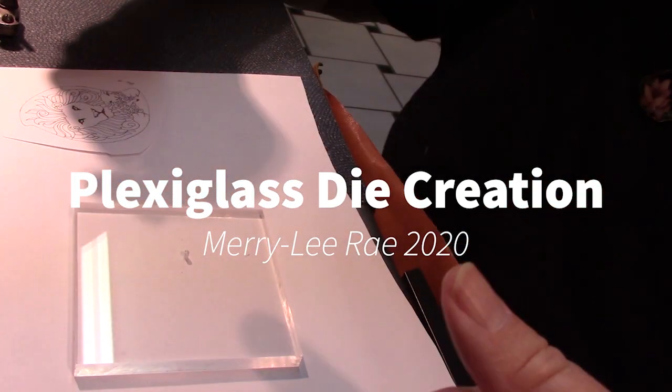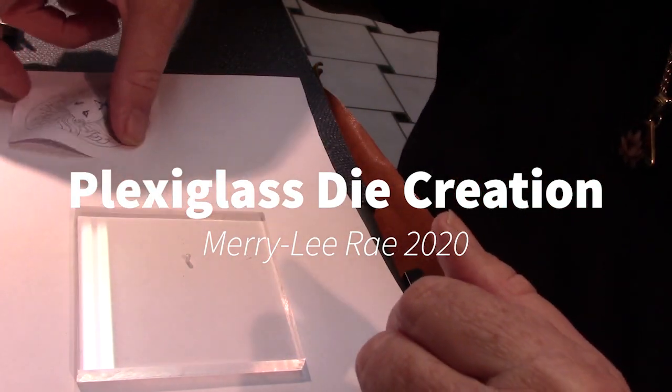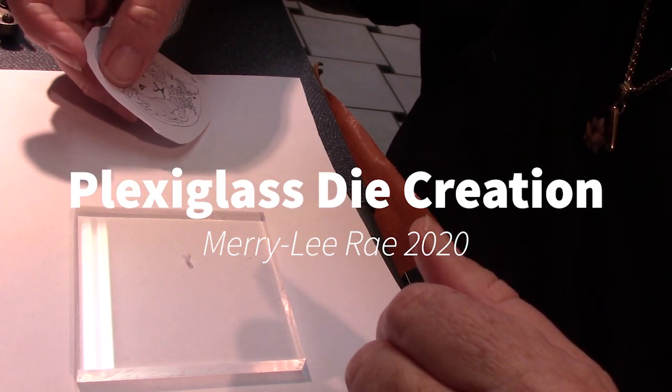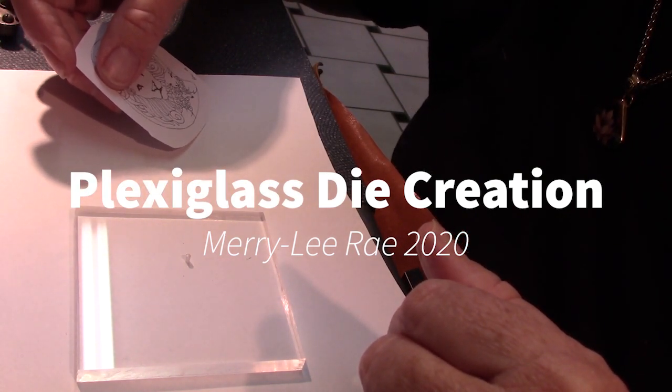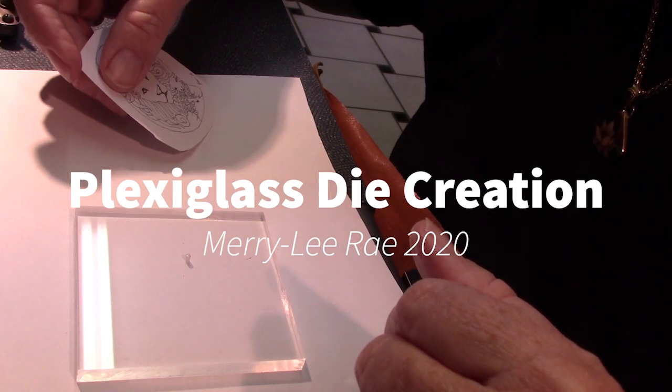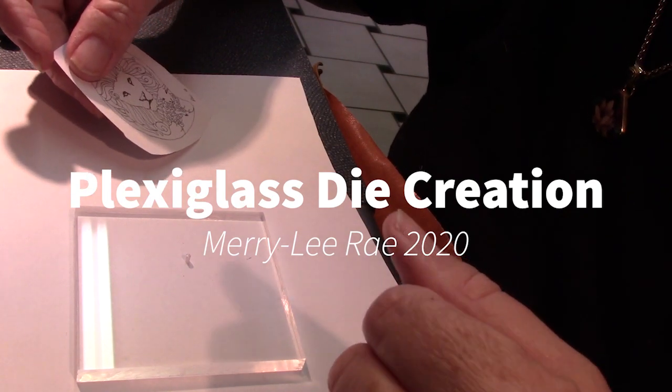Okie doke, I am going to show you how to cut a plexiglass die to do a domed blank for a cloisonné.